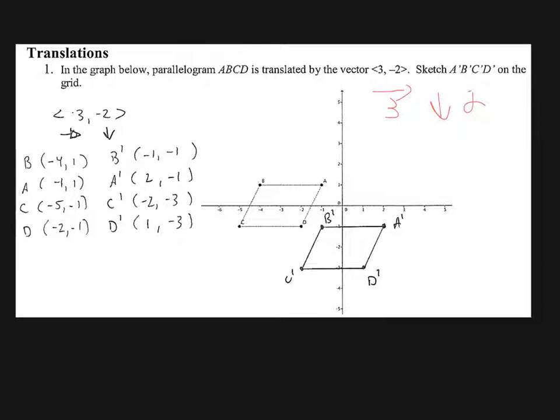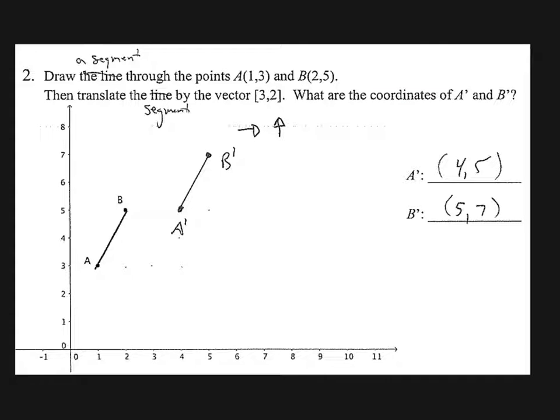The other thing too is I could have counted over 3. So 1, 2, 3 hops. 1, 2 hops down. Lands me there. But I need to identify the coordinates of my prime figure. So I want the figure and the coordinates written. Okay, let's try again.